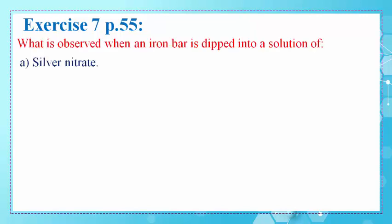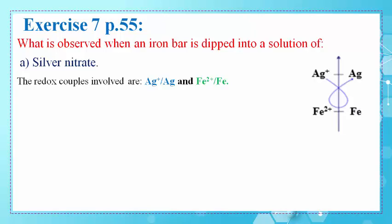The question is: what is observed when an iron bar is dipped into a solution of silver nitrate? The redox couples involved are Ag+/Ag, since we have a silver nitrate solution, and Fe2+/Fe, since we have an iron bar. We classify these two redox couples on an axis.